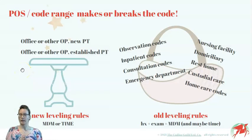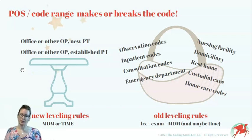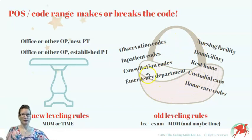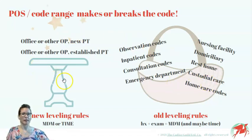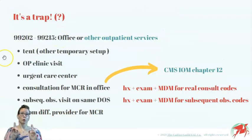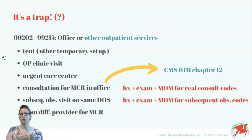Because different guidelines apply to different places of service and code ranges, we will have to pay very close attention to where the patient is being seen and what code range is being used, because it can make or break our coding. For most EM visits we will still use the old rules where history, exam, and the medical decision making component will decide the level of service. And it is only the office and other outpatient services and that code range where we need the new guidelines. One thing to emphasize here is that the office and other outpatient code range is sometimes used for other than office visits.